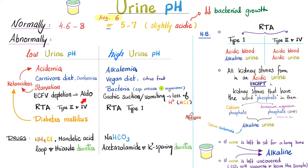Aldosterone has four functions: number one, it reabsorbs salt; two, it reabsorbs water; three, it excretes potassium in the urine; and four, it excretes hydrogen ions in the urine, making your urine acidic. Type 2 and type 4 renal tubular acidosis will give you acidic blood and acidic urine. But type 1 renal tubular acidosis is still an acidosis of the blood, but it will give you an alkaline urine — that's why it belongs here. Medications that can make urine acidic: NH4Cl (ammonium chloride), mandelic acid, and loop and thiazide diuretics.